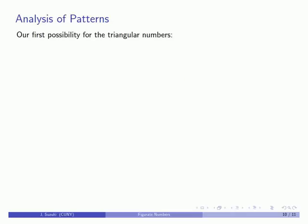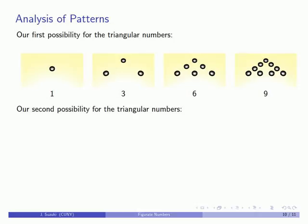So one possibility for our triangular numbers, our possibility A, I have the first four triangular numbers. One, three, six, and one, two, three, four, five, six, seven, eight, nine. So there's my first four triangular numbers if we use this as our fourth triangular number.